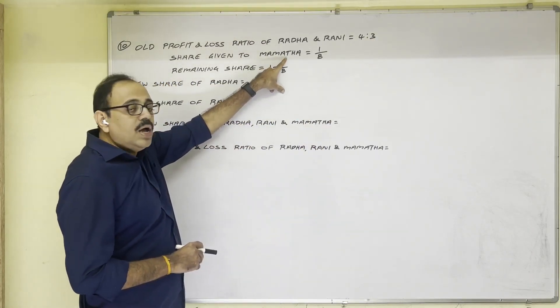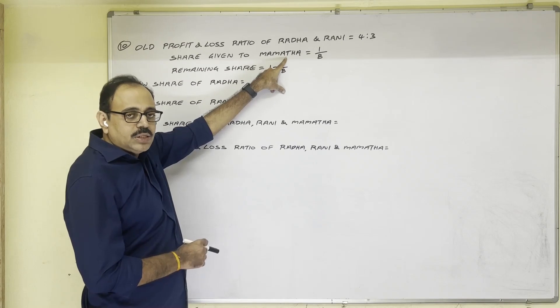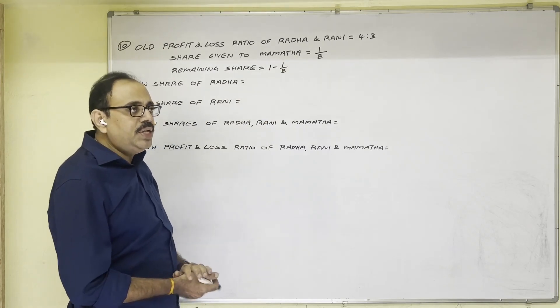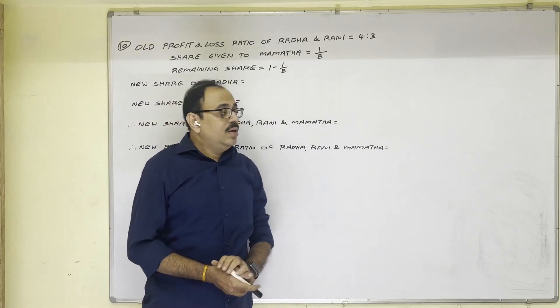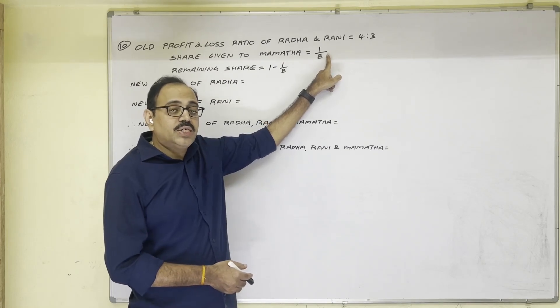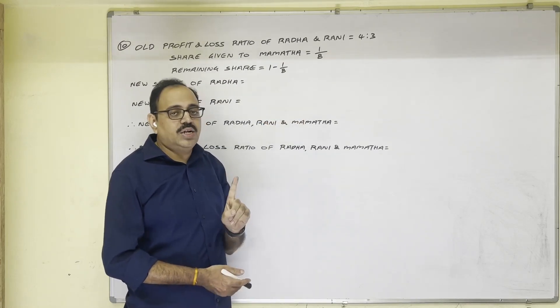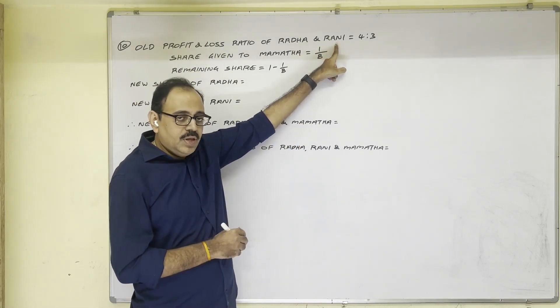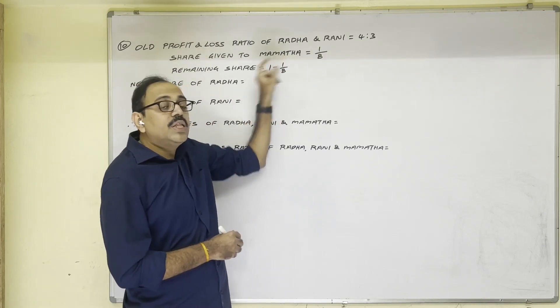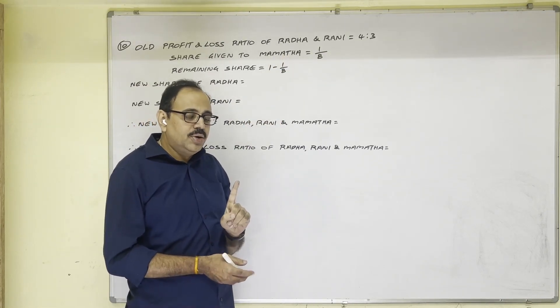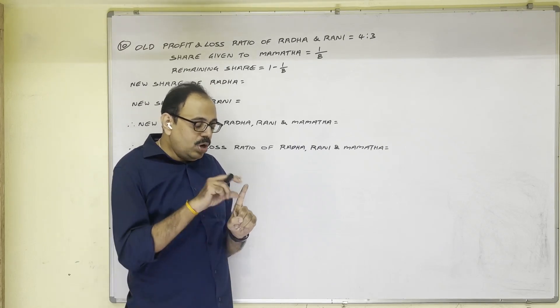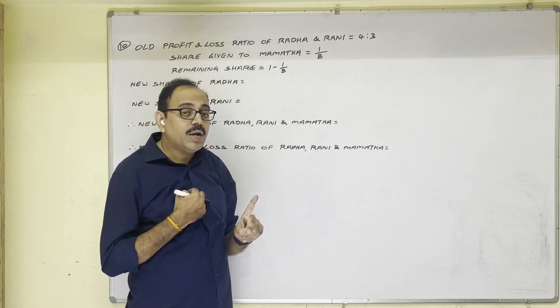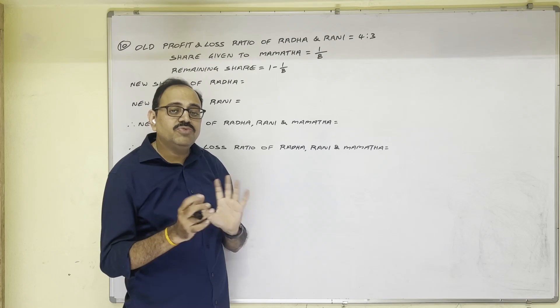They admitted Mamata as a new partner into the business by giving one-eighth share to her. In case of percentage total value is always 100. Here fraction is given, in case of fraction total value is always one. So this one share Radha and Rani are taking. Now new partner Mamata came. From this one share to new partner, old partners have given one-eighth share. So the remaining share now old partners take in future. That remaining share first we should calculate.